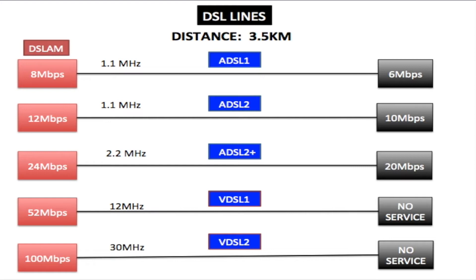Now let's take a look at DSL lines. There are five different types: ADSL, ADSL 1, ADSL 2, ADSL 2 plus, VDSL 1, and VDSL 2.